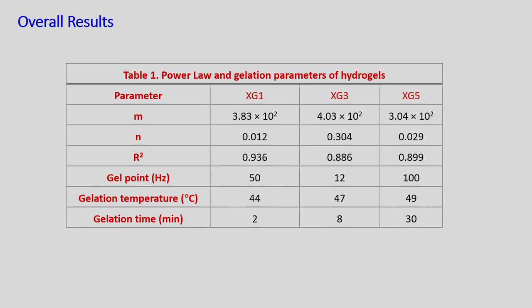In conclusion, we have three different gels with power law constants m and n (all n less than 1, confirming shear thinning). The gel point frequencies differ: 50, 12, and 100 Hz for XG1, XG3, XG5. Gelation temperature lies between 44 to 49 degrees Celsius, and gelation time varies from 2 to 30 minutes. From rheological tests alone — amplitude sweep, frequency sweep, temperature sweep, time sweep — we can determine all these important gel properties without additional experiments.